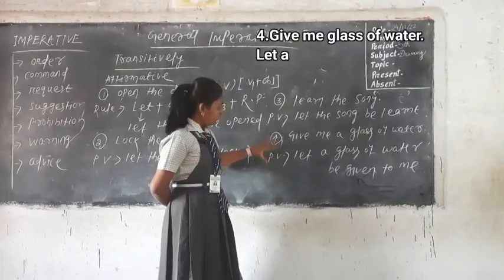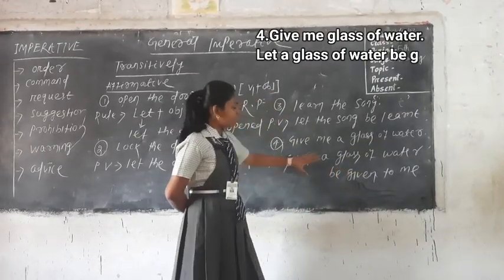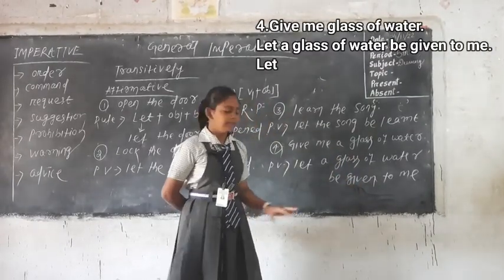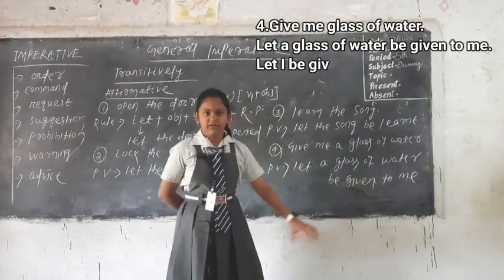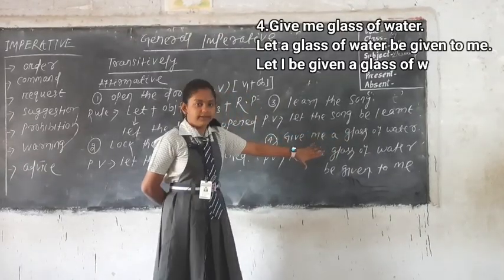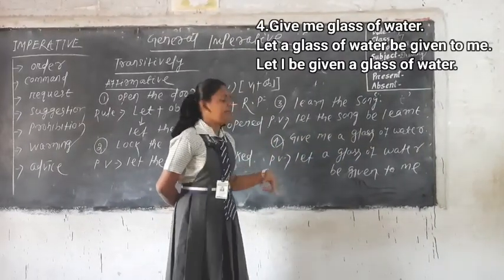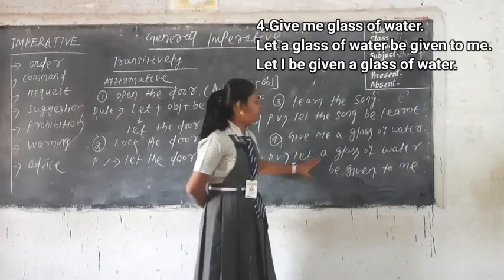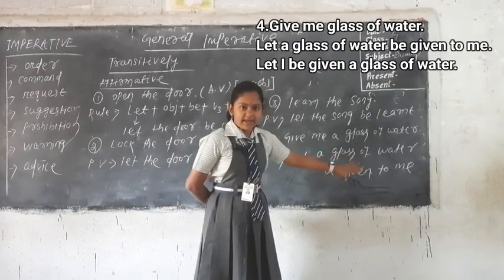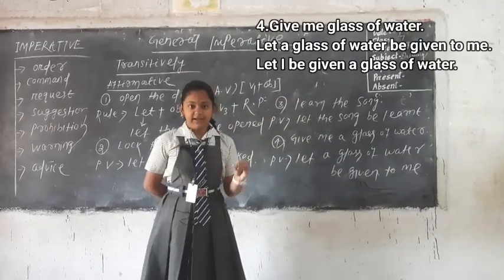In the passive voice, 'give me a glass of water' becomes 'let a glass of water be given to me'. A glass of water is the object, be is used, and the verb 3 form of give is given, followed by 'to me' as the remaining part. In this fourth example there are two objects — a glass of water and me. A glass of water is the direct object and me is the indirect object. So this sentence can be passivized in two ways: first, 'let a glass of water be given to me', using the direct object, with 'to me' for the indirect object.